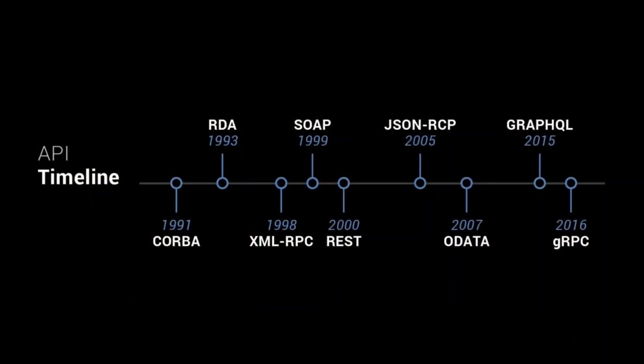In the market, there are many different types of APIs launched and used. So, in 1991, CORBA was the first one. It was upgraded to RDA, then upgraded to XML-RPC.